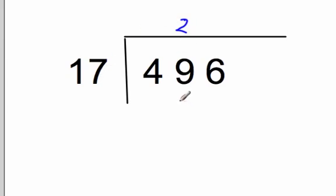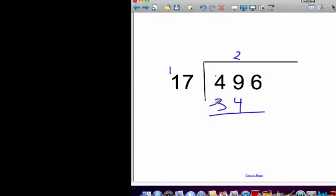7 times 2 is 14. 1 times 2 is 2, plus 1 is 3. We have 15 for our remainder, and that remainder is smaller than 17, so we're in good shape. We can bring it down.